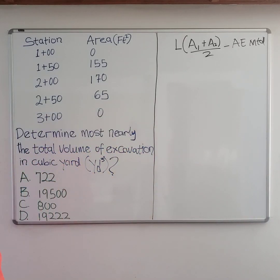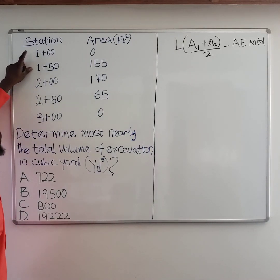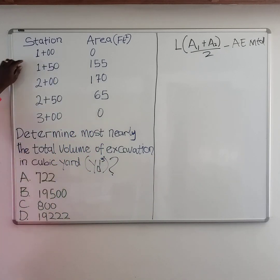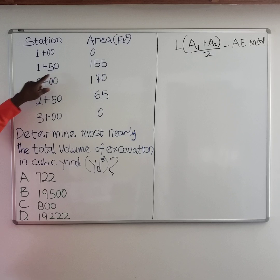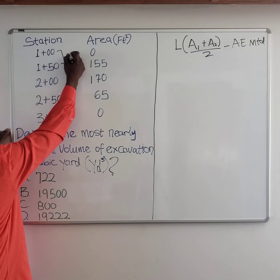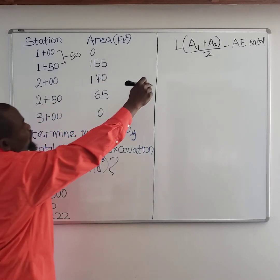We're going to use that method to solve this. We know our stations. The length between stations, as you can see, from station 1 to station 2 is 50. So L equals 50.